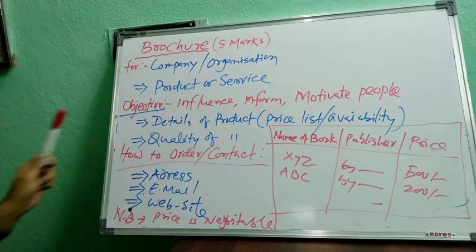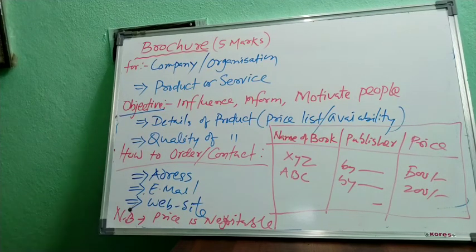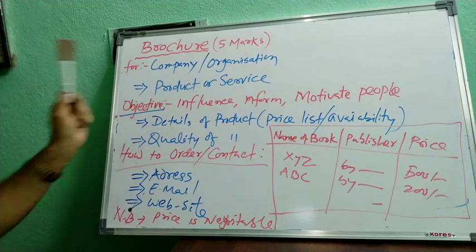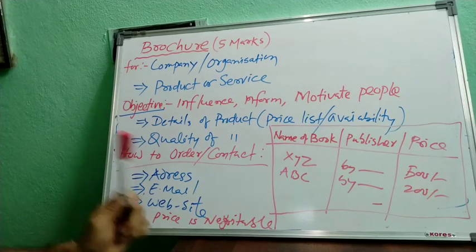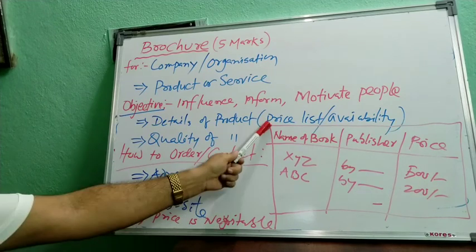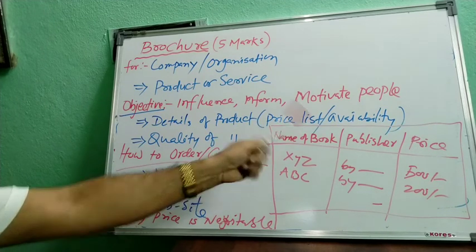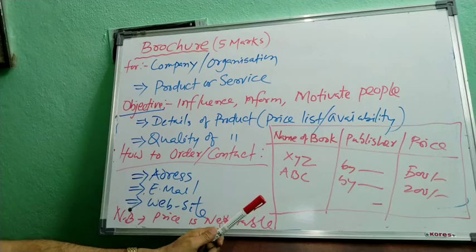Here you have to give the details of the product, and you have to give the establishment of your company and the better service you are giving to the people. After that, whatever products — let us suppose you are a bookseller — then you can give the price list and availability, where and what is available. You can write in a paragraph, no problem.